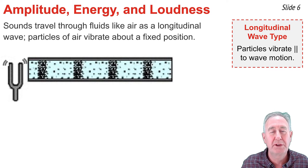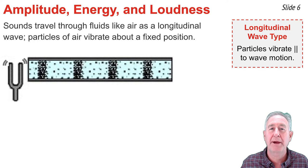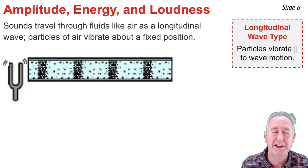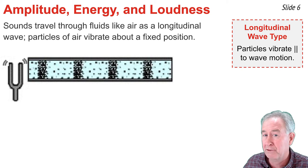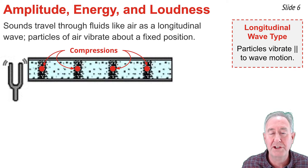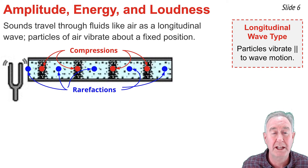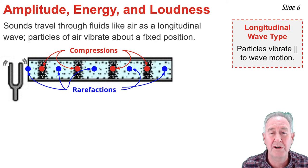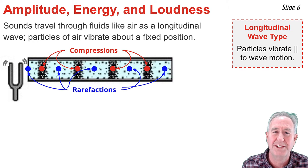Sound travels through fluids such as air as a longitudinal wave. The particles of the medium vibrate back and forth in a direction that is parallel and anti-parallel to the direction the wave is traveling. So if a wave is traveling from a tuning fork from left to right, particles of the medium vibrate back and forth left to right and right to left. This creates compressions and rarefactions within the medium, and this pattern is what we observe moving from the source to the surrounding regions.